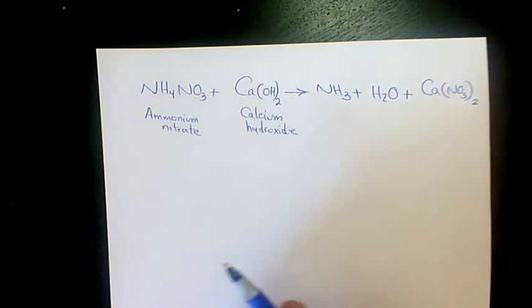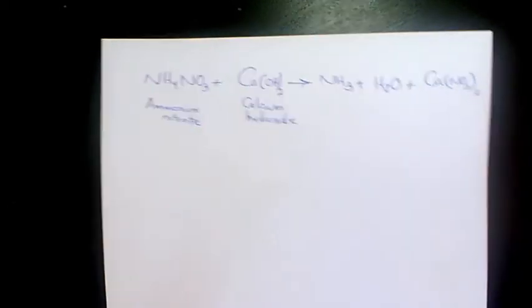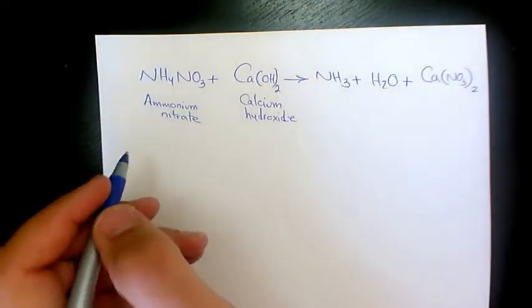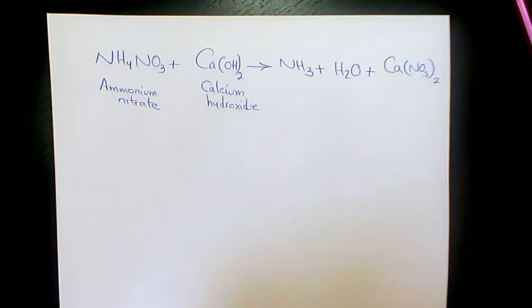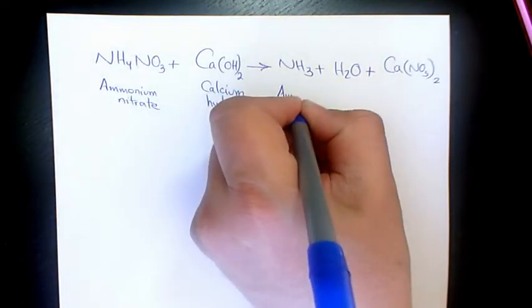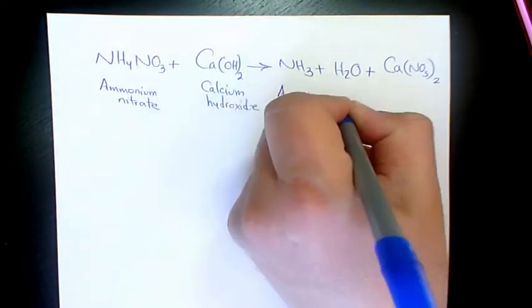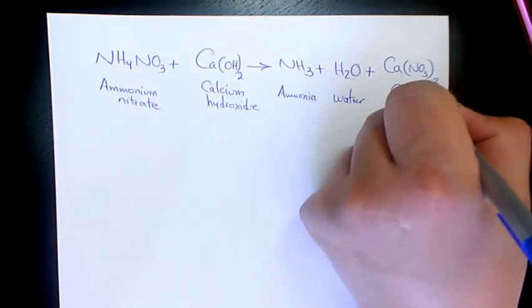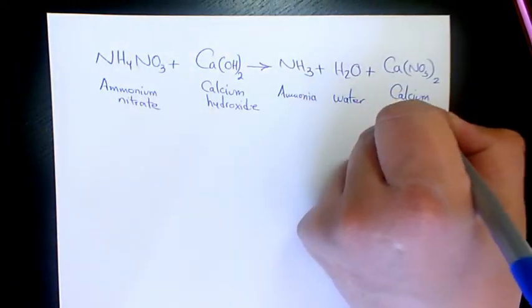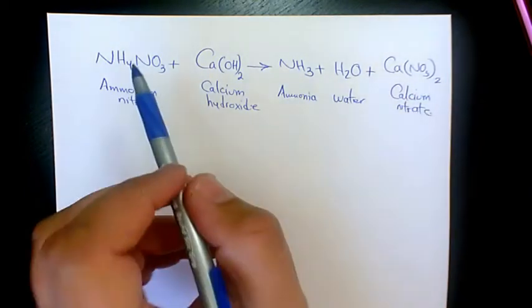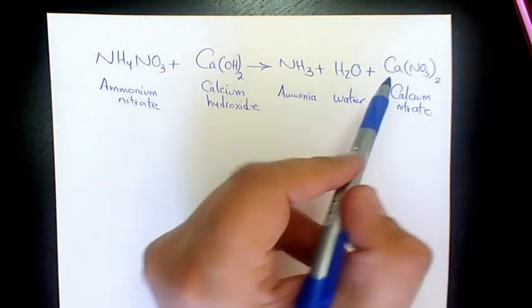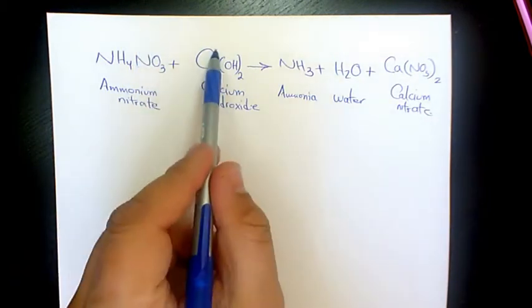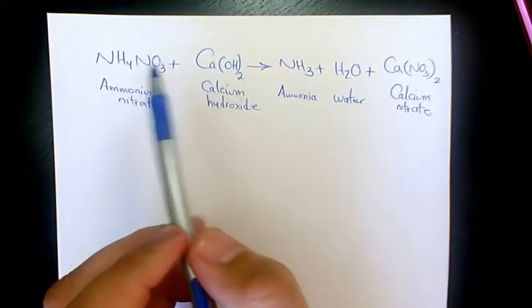So then we need to balance it. We have ammonia, water, and calcium nitrate. Let's start with calcium. Calcium is 1 on the left and here we have 1 on the right.